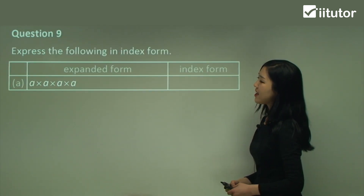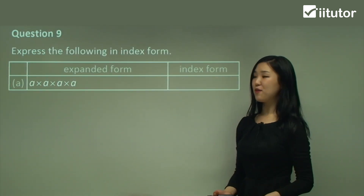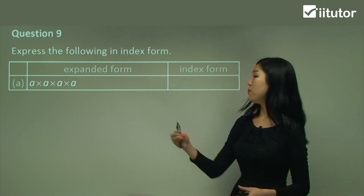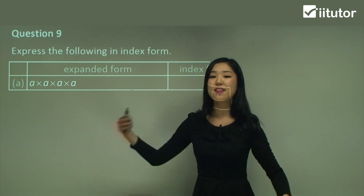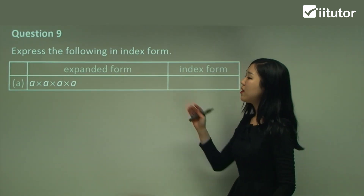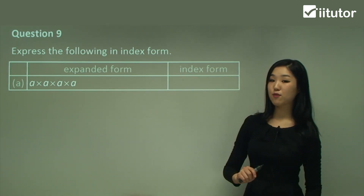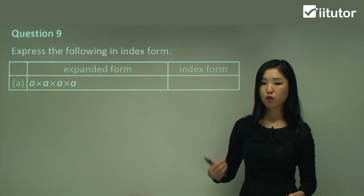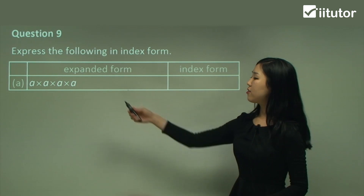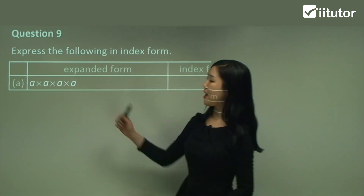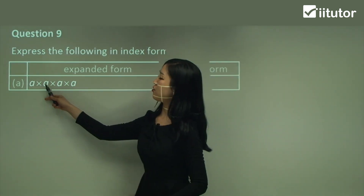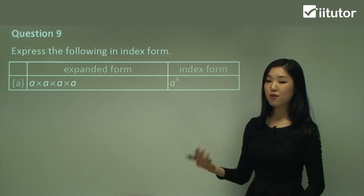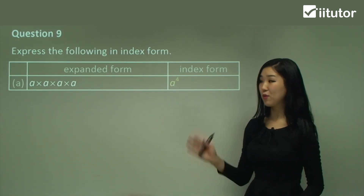Question 9: express the following in index form. So the expanded form is when we spread it all out, and we want to convert this to index form. All you need to know is how many of each pronumeral or number we have. Here with 'a', how many a's do we have? 1, 2, 3, 4. So all we need to write is a to the power of 4, because there are 4 lots of a's.